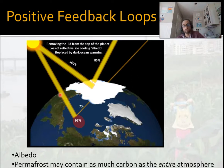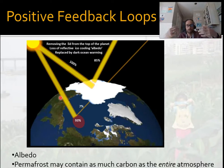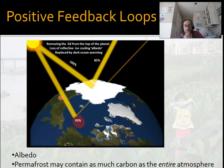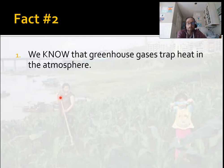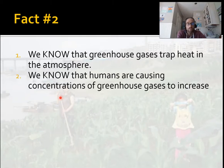Permafrost has carbon and methane locked up in it. As the planet warms, permafrost starts to melt, releasing methane and carbon dioxide, which causes more warming, which causes more melting, and more warming — a self-reinforcing loop. Climate models are actually not very good at modeling this, so these are things that may cause increased warming in the future. We may reach a tipping point where it can get out of control, so we have to be really careful about these positive feedback loops.